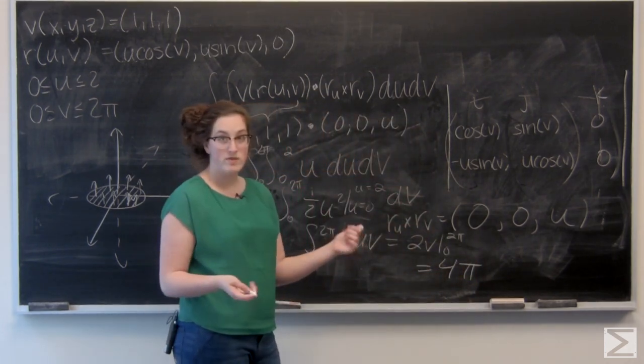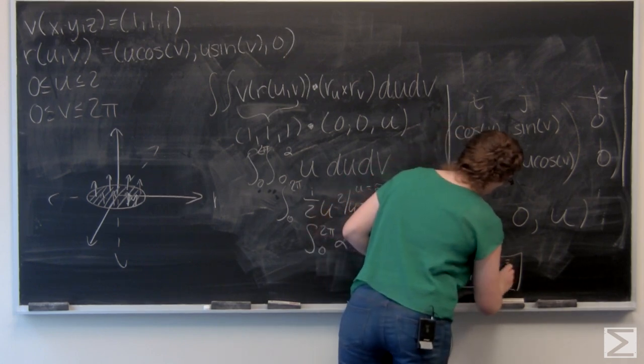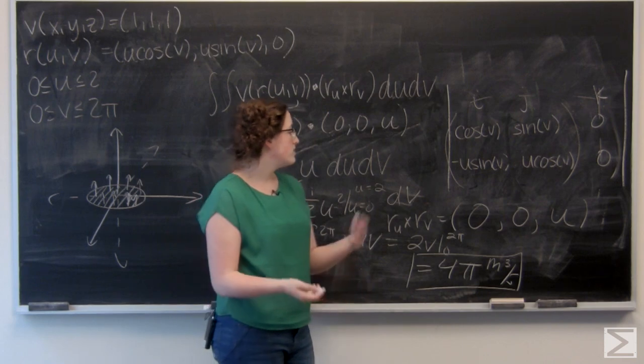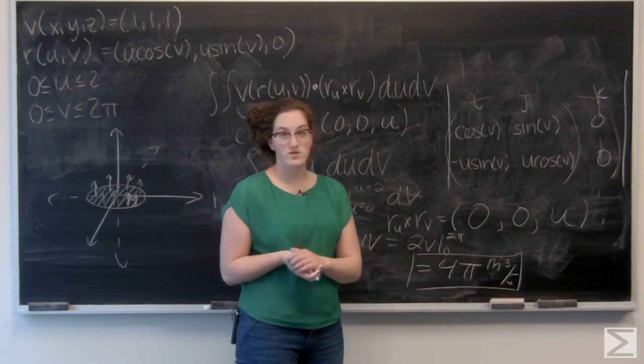Plug in 0, and I just get 0. So my answer is going to be 4 pi meters cubed per second. So the fluid flowing through our surface M is flowing through at a rate of 4 pi meters cubed per second.